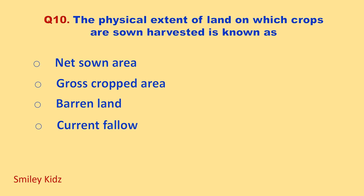The physical extent of land on which crops are sown and harvested is known as? Your options are: net sown area, gross cropped area, barren land, current fallow. Your time starts now.